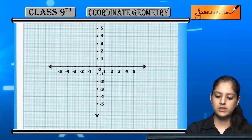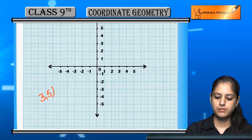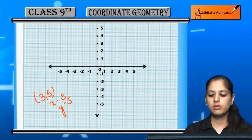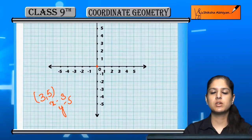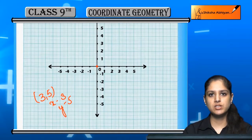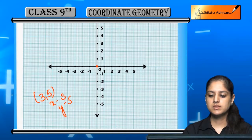Hame jo number diya hai woh hai 3,5. X-coordinate hai 3, y-coordinate hai 5. Zero se hum start karenge, hame x ki taraf move karenge, x hai plus 3. Left ya right jayenge? Right jayenge, plus 3. 3 units hame move kiya.